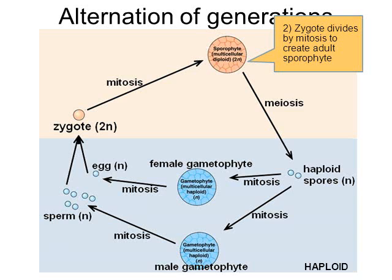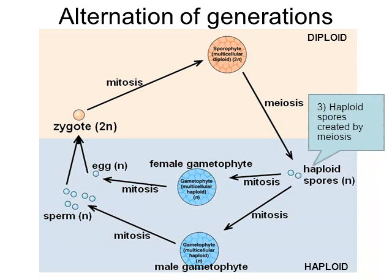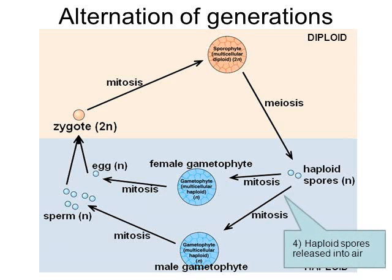The sporophyte has the word 'spore' in it, so the sporophyte makes spores. Follow the arrow — the sporophyte makes spores through the process of meiosis. When meiosis creates cells, those cells will be haploid. So the sporophyte made haploid spores, and often those spores are just released into the air. When the spores are released and land, some will grow into the female gametophyte and others into the male gametophyte.